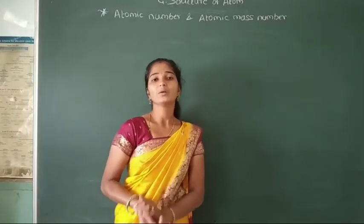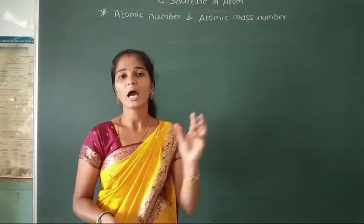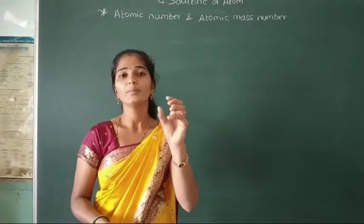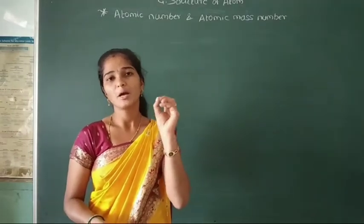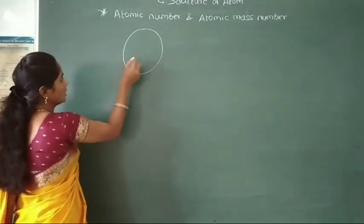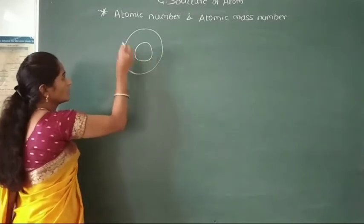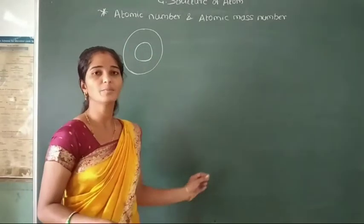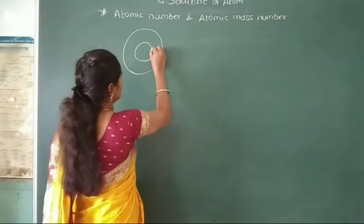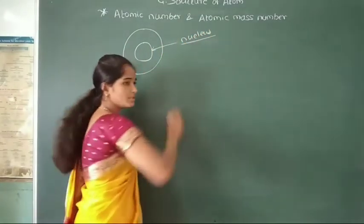We know that the atom has a hard spherical shape with an empty space present inside. Suppose this is an atom — inside this atom there is a small empty space, and this small empty space is called the nucleus.